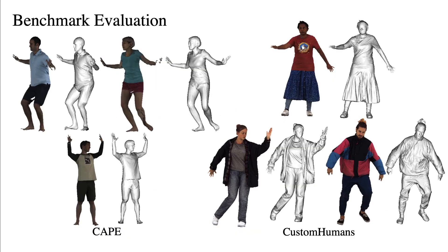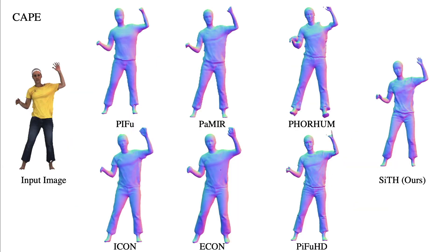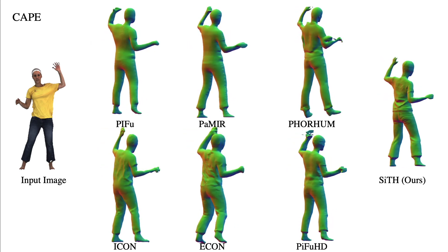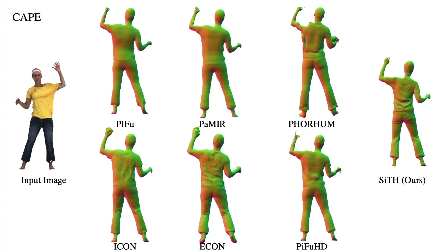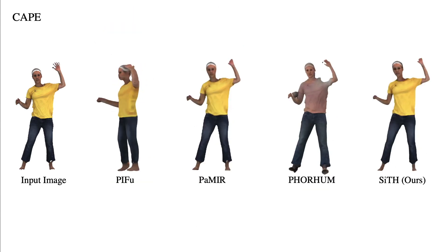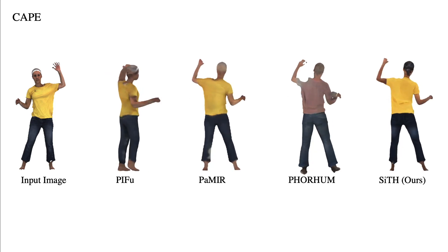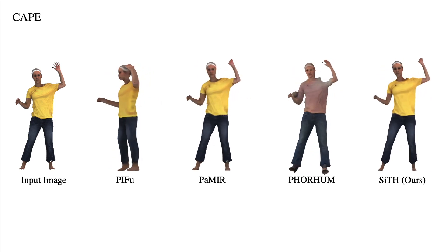In our experiments, we follow ICON using the CAPE dataset as an evaluation benchmark. Moreover, we create a new benchmark with the high-quality Custom Humans dataset to complement the quality and diversity of the CAPE dataset. We visually compare the reconstructed mesh across different baselines. Our method produces realistic clothing details in unobserved regions, and also hallucinates realistic back-view appearances.